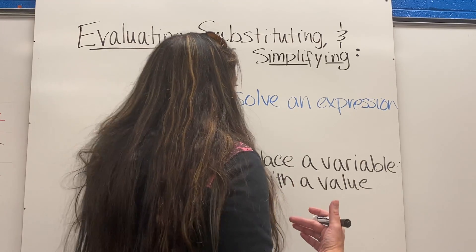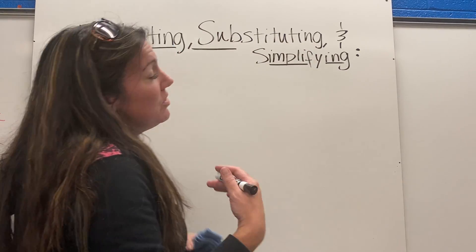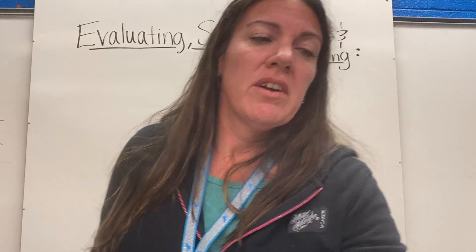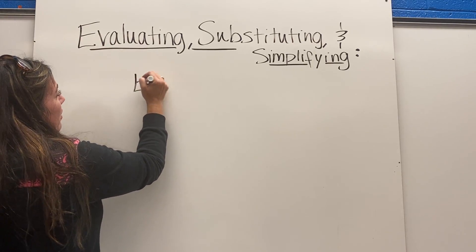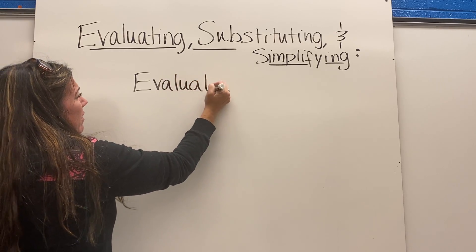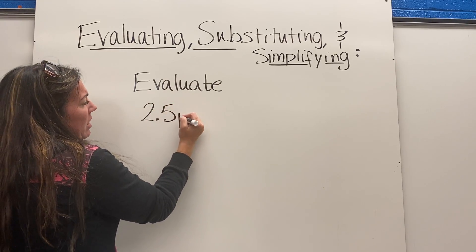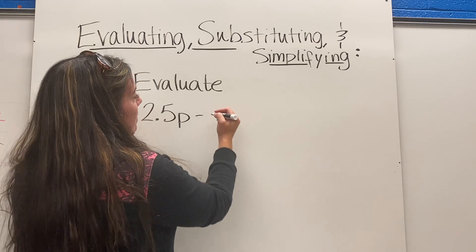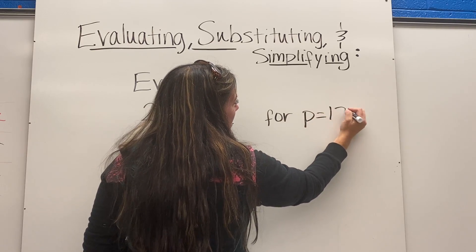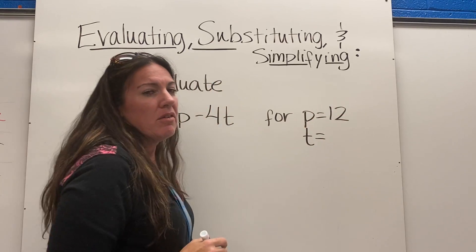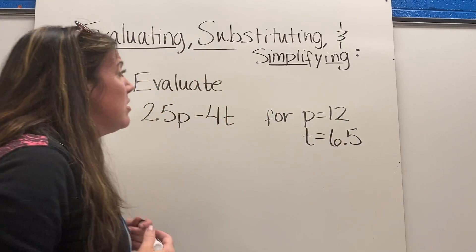The homework tonight is really going to be about doing some of this evaluating of expressions and using some simplifying and substitution. I'm just going to go over a couple examples of what you might see tonight. The directions would be to evaluate. And the question would be something like this: 2.5p minus 4t, for p equals 12, t equals 6.5.